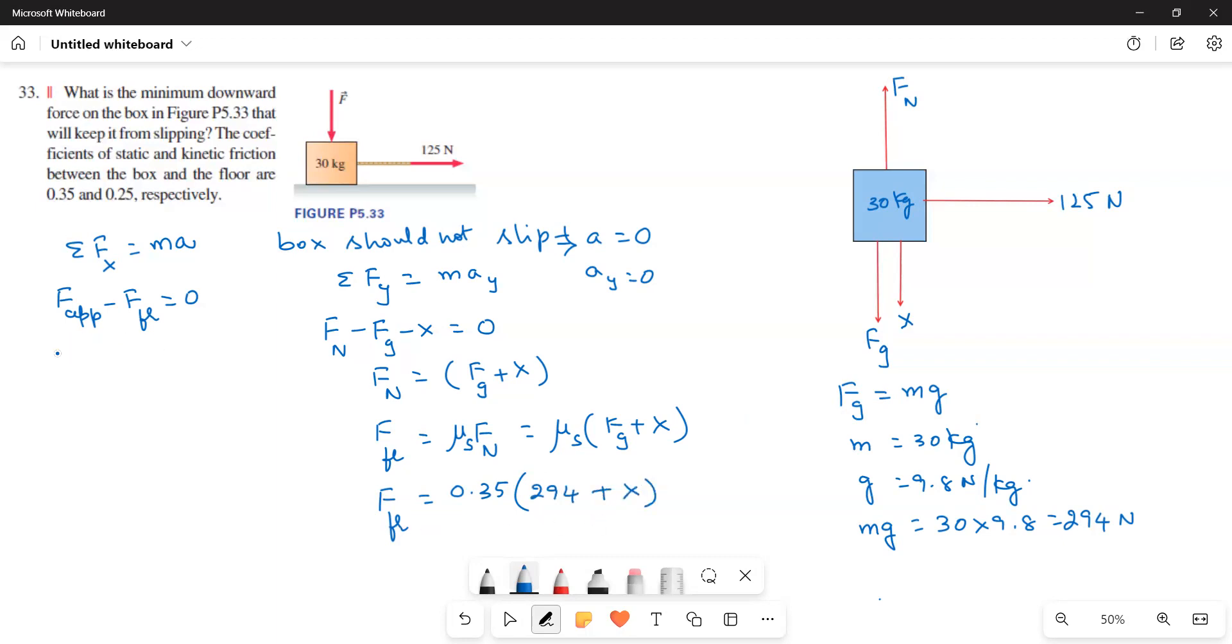This is the friction. Now I will write here. So F applied is equal to F friction, and F applied is 125 Newtons. So 125 Newtons is equal to 0.35 times 294 plus X.